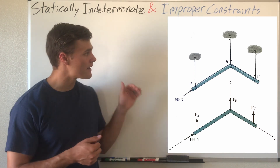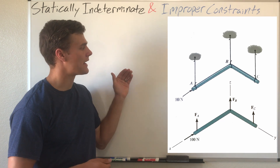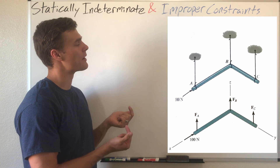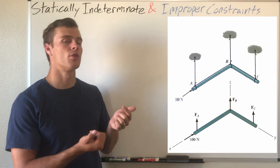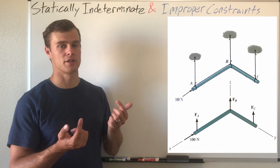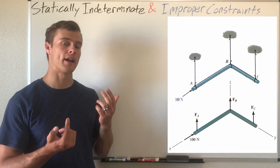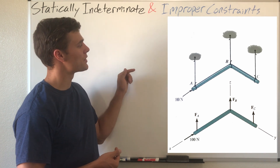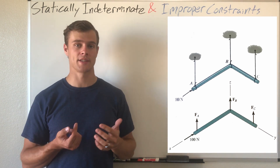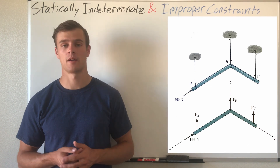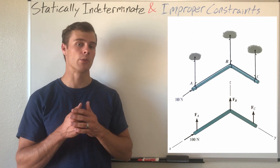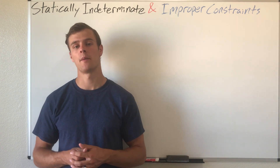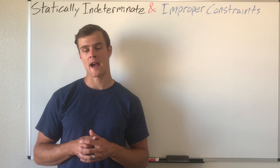Here we have a pipe hanging from the ceiling, and all the forces from the wires are pulling up on it, so it can only resist force in that direction — parallel to those wires, what we might call the y-direction. But if we have another force, say 100 newtons pushing on it, there's nothing to resist that force, and therefore it will move and not be in equilibrium — making it improperly constrained.